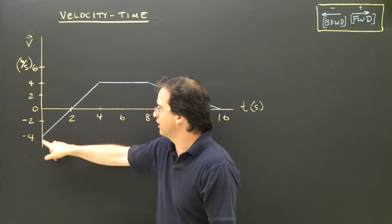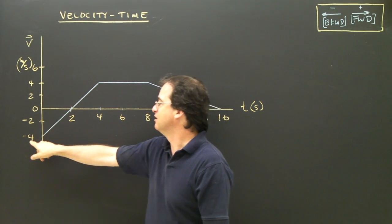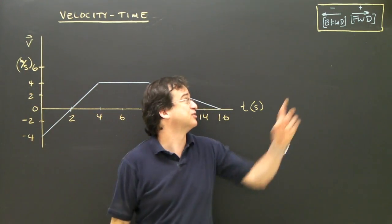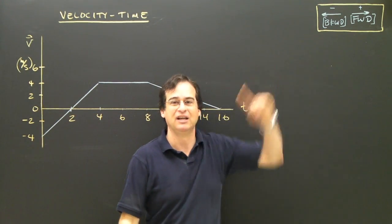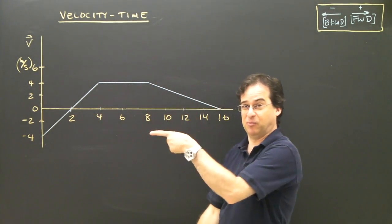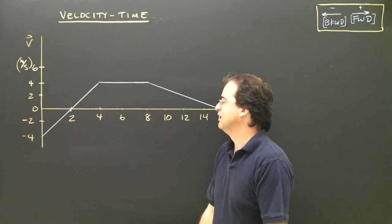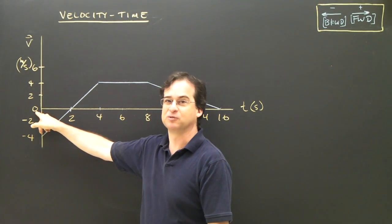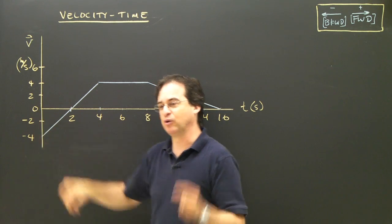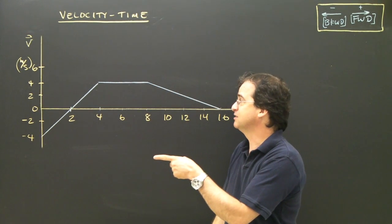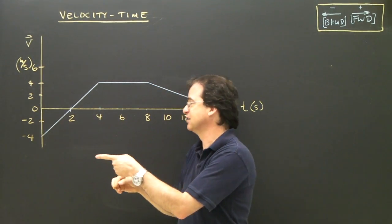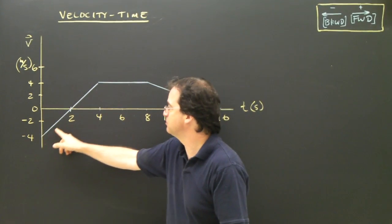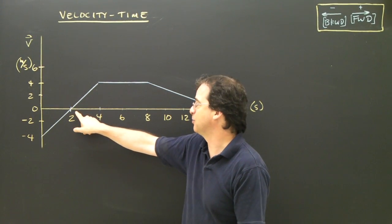At 0 seconds, we're at negative 4 — that means negative 4 meters per second. We're running backwards at 4 meters per second west. At 2 seconds, I'm at 0 meters per second, so I'm not moving. I was running west, and now I've stopped, so this section shows slowing down and stopping.